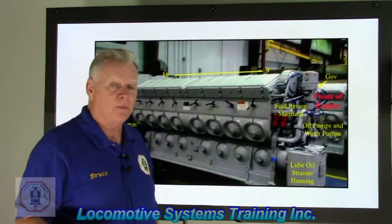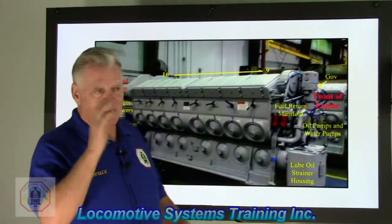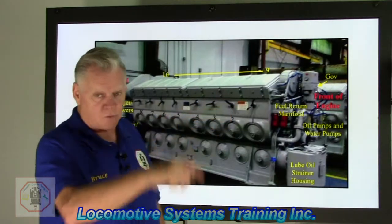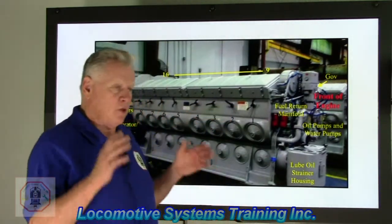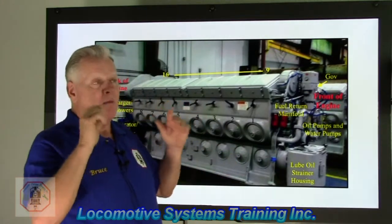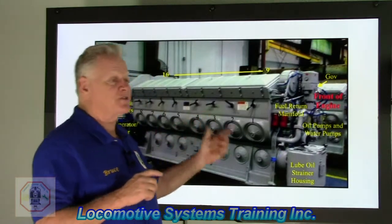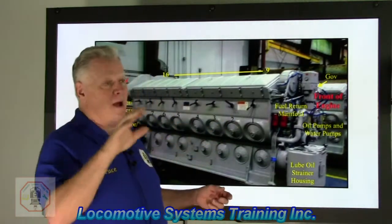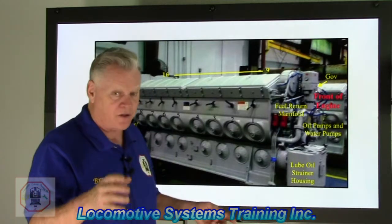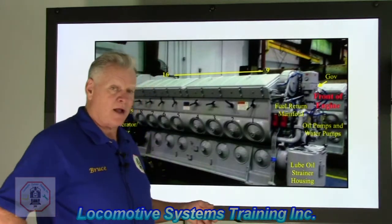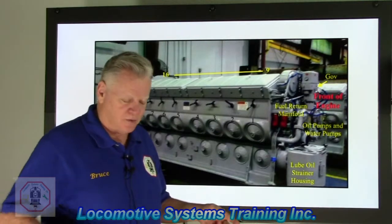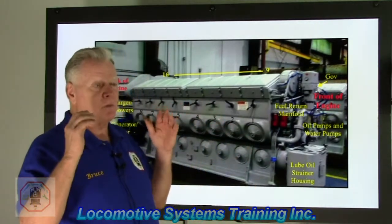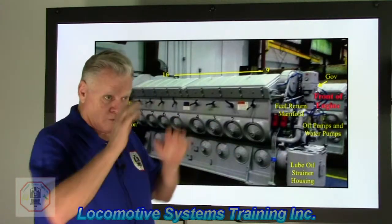Now let's take that letter F and put it long hood forward. Sitting in the cab with the diesel engine facing me and the generator out there — the long hood end is facing forward — my left is the car body left, and it's also the diesel engine left. My front is also the front of the locomotive and also the front of the engine. My right of the diesel engine is also the right side of the car body, and my rear is the rear of the diesel engine and main generator. So it does make a big difference which way that letter F is facing, or where it's located on which end.